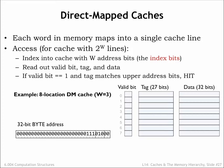The operation of a Direct Mapped Cache is straightforward. We'll use part of the incoming address as an index to select a single cache line to be searched. The search consists of comparing the rest of the incoming address with the address tag of the selected cache line. If the tag matches the address, there's a cache hit and we can immediately use the data in the cache line to satisfy the request.